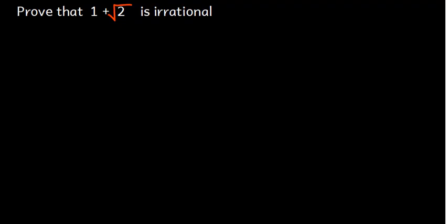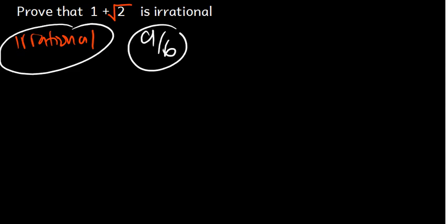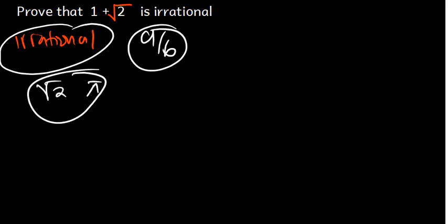Whenever we're talking about irrational numbers, these are numbers which cannot be expressed in the form of a over b. That's why some examples of irrational numbers are the square root of 2 and pi — these cannot be expressed in the form of a over b.